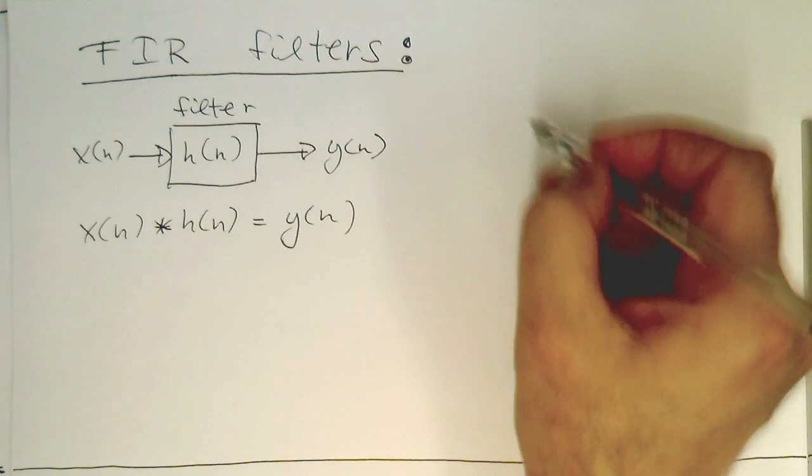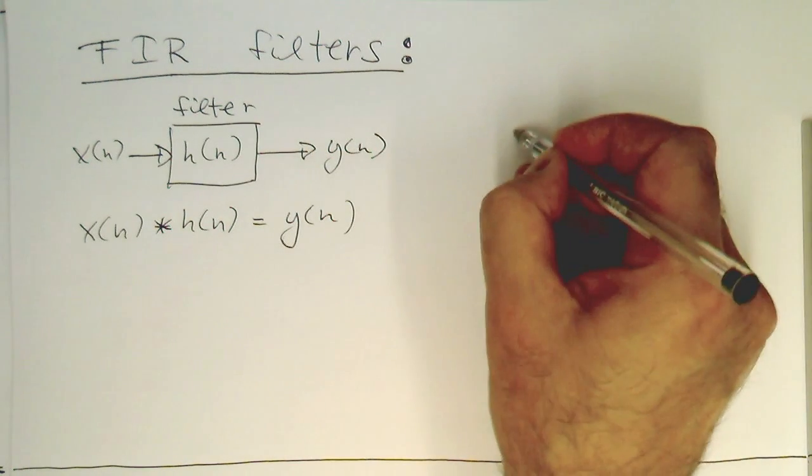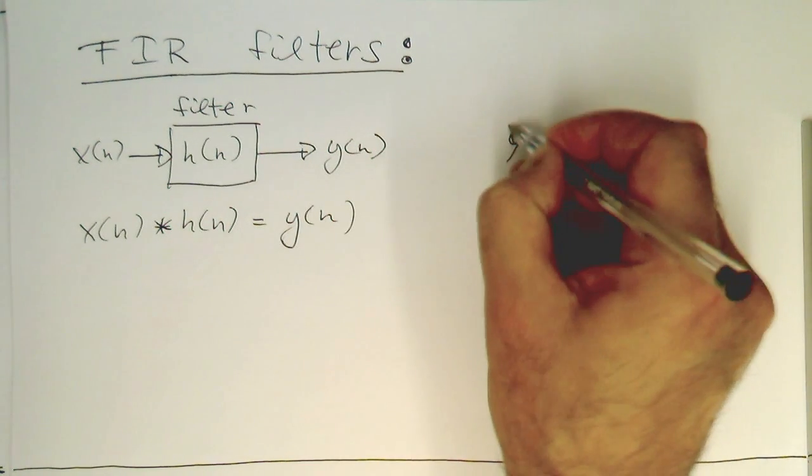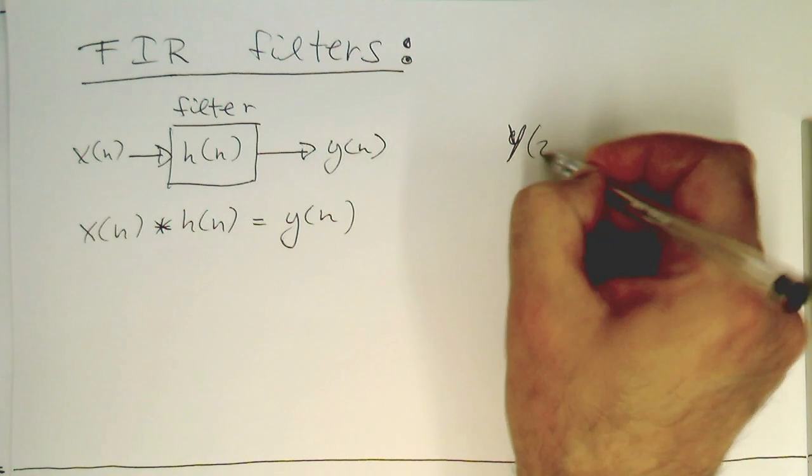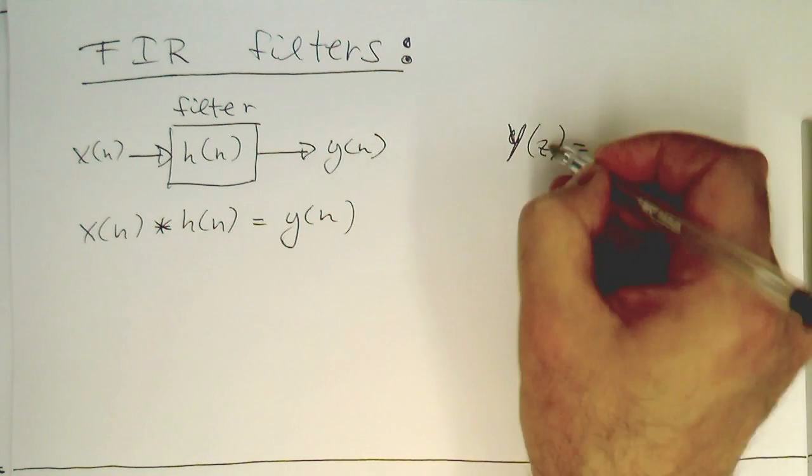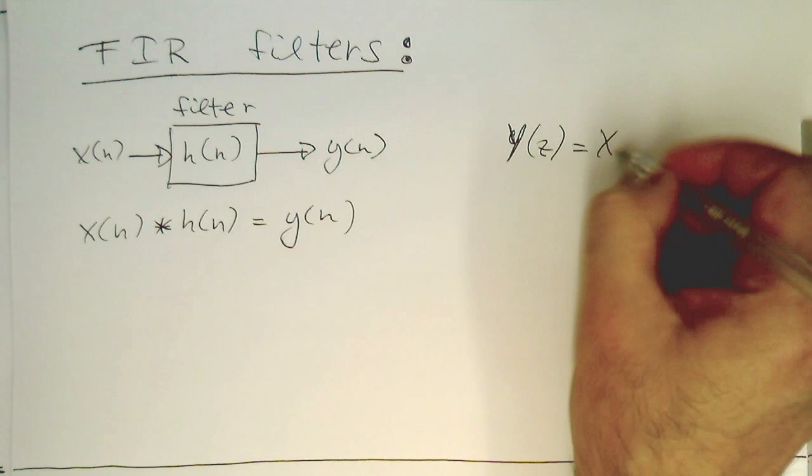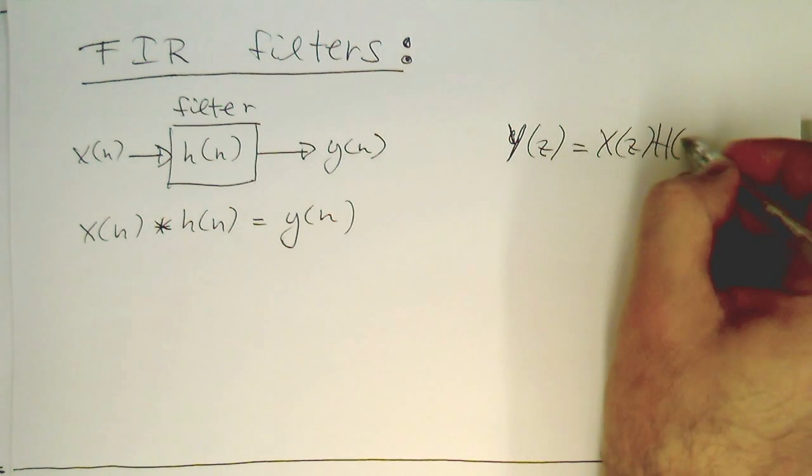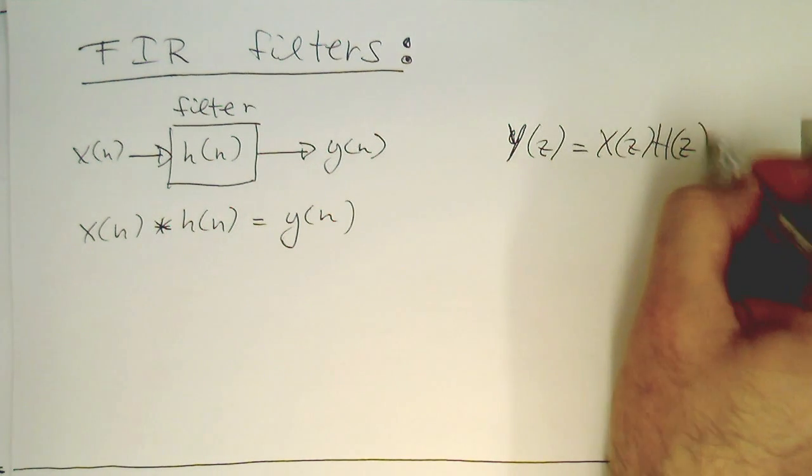We also know that if we want to have Y(z), then we just multiply X(z) with H(z).